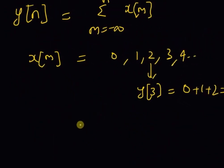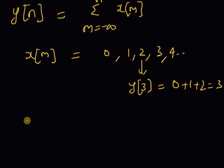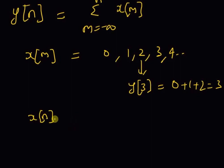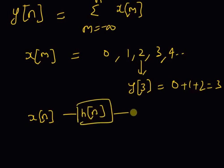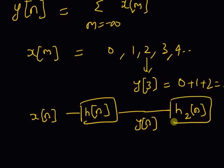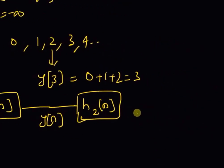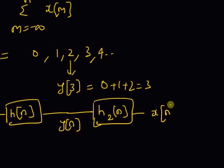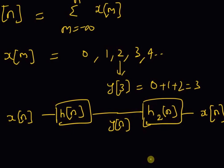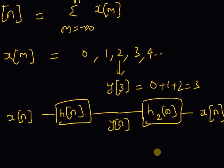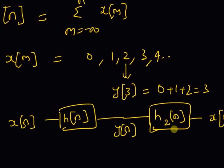Given an accumulator, we want to find its inverse. An inverse system is defined as follows: given an input x(n) to a system with impulse response h(n), the output is y(n). We then give this output as input to a next system with impulse response h2(n), and the output should equal x(n). In this case, h2(n) is the inverse system of h(n).